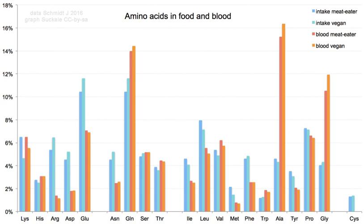The combination of these functional groups allows amino acids to be effective polydentate ligands for metal amino acid chelates. The multiple side chains of amino acids can also undergo chemical reactions, and the types of these reactions are determined by the groups on these side chains and are therefore different between the various types of amino acid.